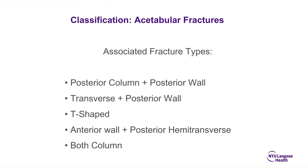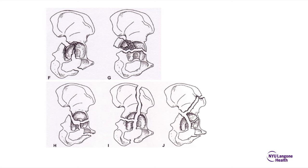The associated fracture types are: posterior column and posterior wall, transverse and posterior wall, T-shaped acetabular fracture, anterior wall plus posterior hemitransverse, and both column acetabular fractures. In the both-column fracture, no part of the acetabulum is attached to the intact ilium; the pathognomonic x-ray finding is the spur sign. These fracture types are shown here from the Letournel and Judet book on acetabular fractures.